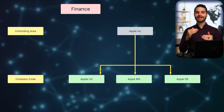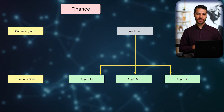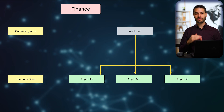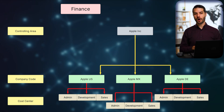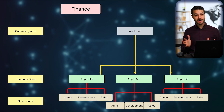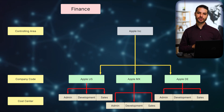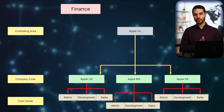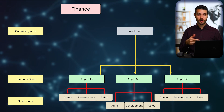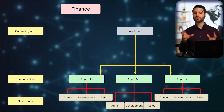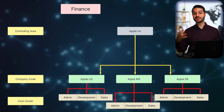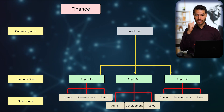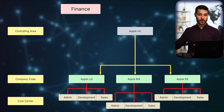Below the company codes, we have cost centers. Each company code will have several cost centers, and a very common approach is to have them reflect the departments of the business. For Apple US, that might be a marketing department, development, admin, sales, etc. — each department being its own cost center. That's where costs and expenses are attributed and gathered, then consolidated up into the company code.